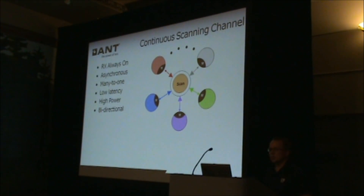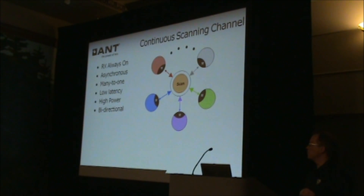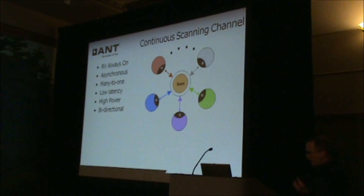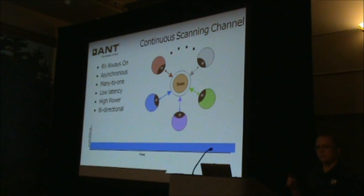Continuous scanning channels are another technology introduced fairly recently, and they address a neat use case. With continuous scanning channels, the receiver is always on — it never actually synchronizes to any transmissions of the master. This results in much lower latency, so you're going to get the first message that the master sends. And because your radio is on all the time, you're actually enabling many-to-one topologies, because you're not limited to receiving messages from just one master.